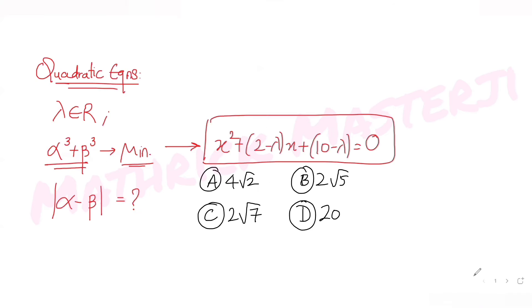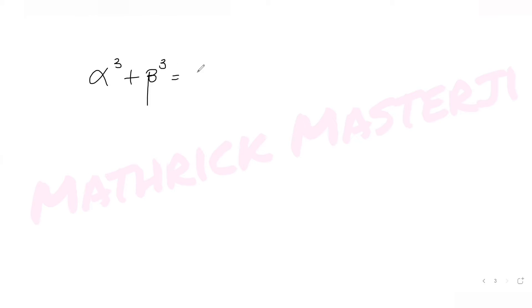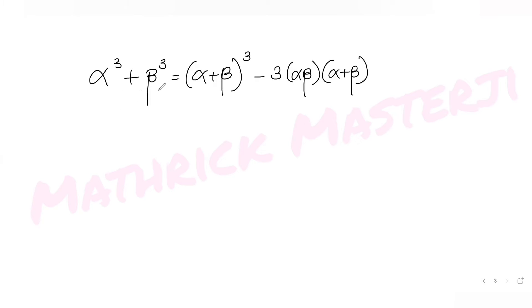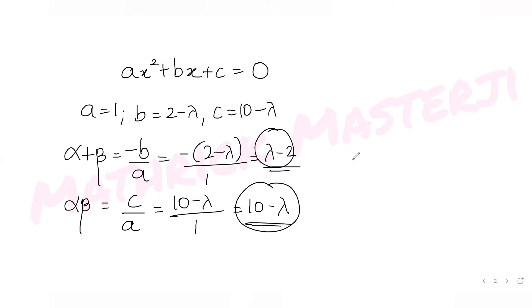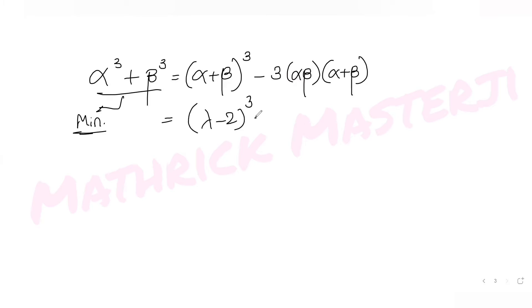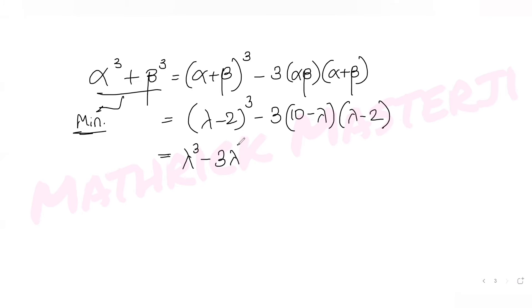Now I use the identity for sum of cubes: α³ + β³ = (α + β)³ - 3αβ(α + β). This has to be minimum. Substituting: (λ - 2)³ - 3(10 - λ)(λ - 2). Expanding (a - b)³ gives a³ - 3a²b + 3ab² - b³, minus 3 times the product of the two brackets, which gives 10λ - 20 - λ² + 2λ.